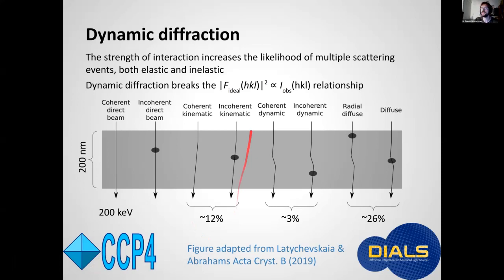At 200 kV energy of the electrons you see approximately 12 percent of those electrons will contribute to the kinematic signal for which the F squared proportional to I holds but there's a further signal of about a quarter of that of electrons that also end up in the Bragg spots but for which this relationship doesn't hold.